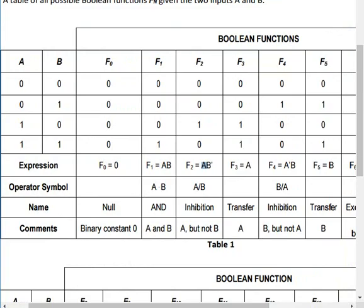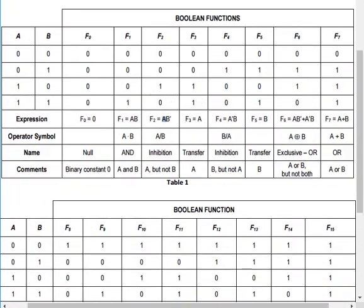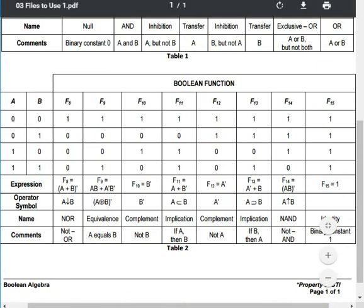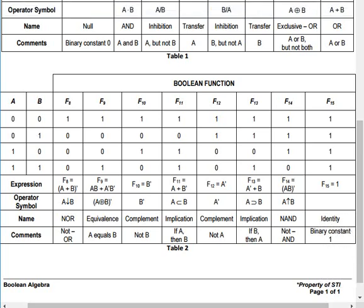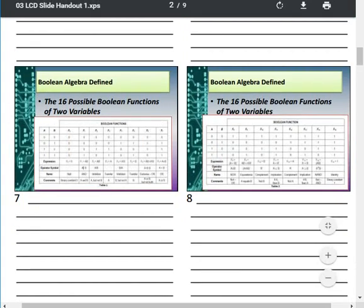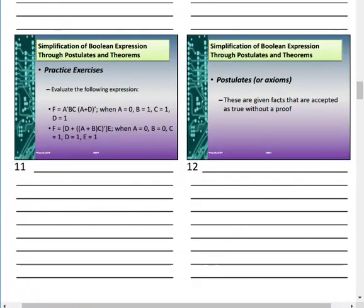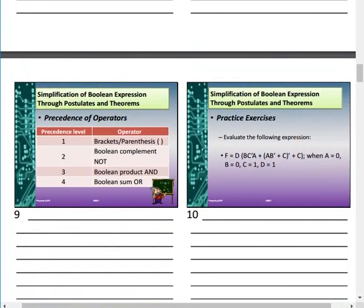Take note of these functions — exclusive OR, NOR, NAND, and complementary — as they appear in the table. Notice that we first handle the overbar before proceeding. This is because we follow a precedence rule: we cannot jump straight to addition or multiplication without first following the correct order of operations.